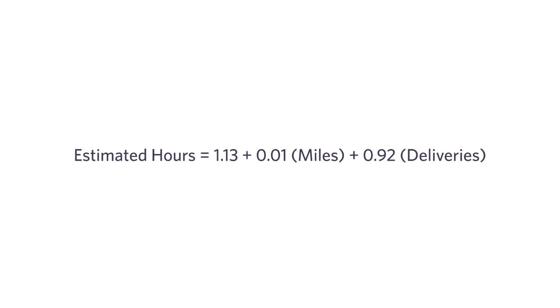So if we run a regression on this and feed the whole thing through the computer, the computer comes back and says: you've got this cloud of data that's miles, deliveries, and hours. And the line — or in this case a plane, because it's three-dimensional — that fits the data most closely is this: your estimated hours is 1.13 plus 0.01 times miles plus 0.92 times deliveries.